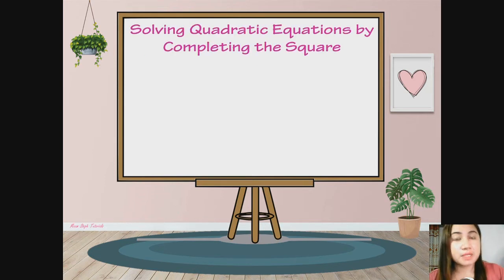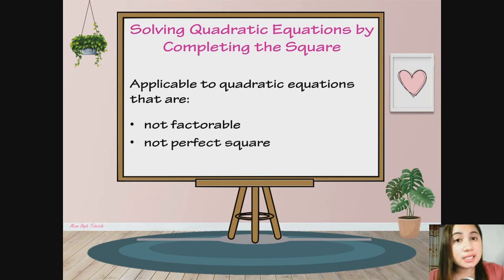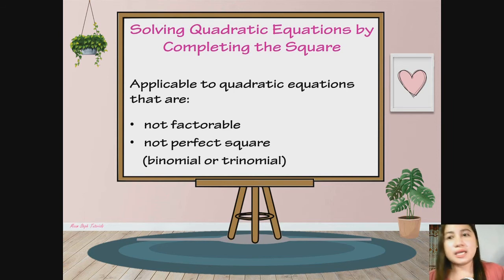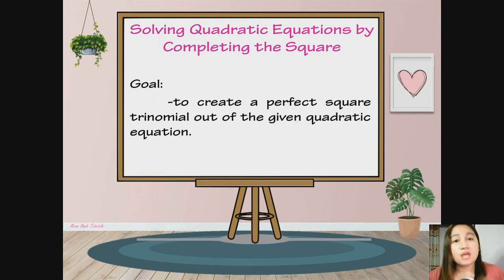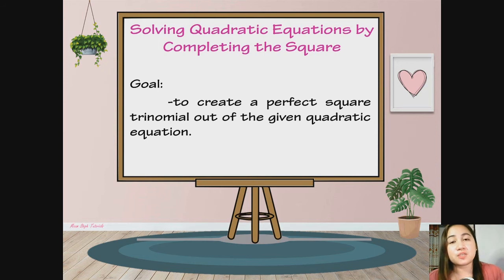Solving quadratic equations by completing the square — this method is applicable for quadratic equations that are not factorable, and quadratic equations that do not have a perfect square trinomial. It can be either a binomial or a trinomial quadratic equation. Our goal in using this method is to create a perfect square trinomial out from the given quadratic equation. And since we already know how to factor a perfect square trinomial, solving will be easier.